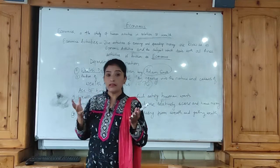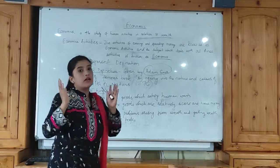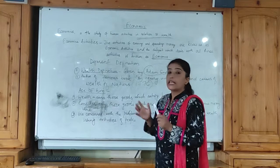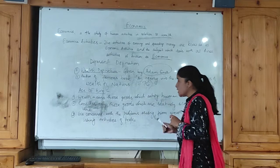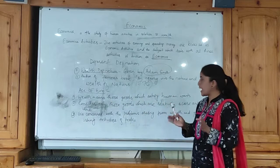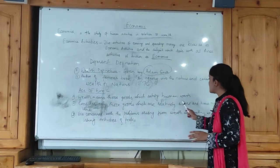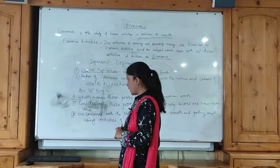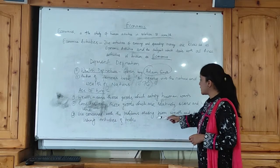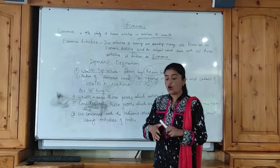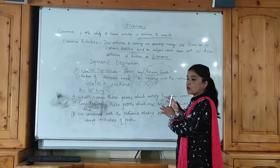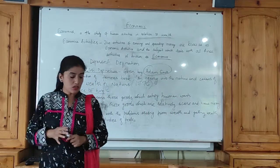However, not all goods are considered wealth. For example, sunlight and air are present in abundance, but those goods are not considered wealth because they are not limited in supply. We consider only those goods which are relatively scarce and have money value. So wealth, according to Adam Smith, means goods which are relatively scarce and have money value. Economics is concerned with the problems arising from wealth-getting activities — how people earn money and how people earn wealth.